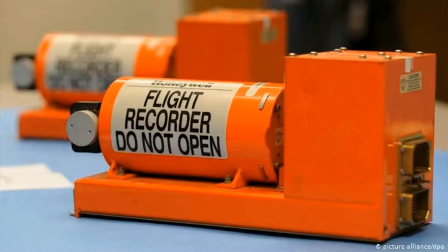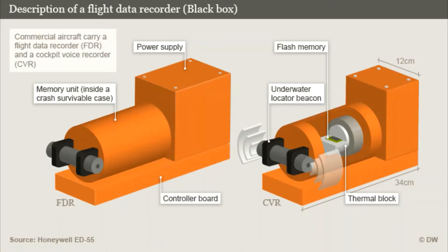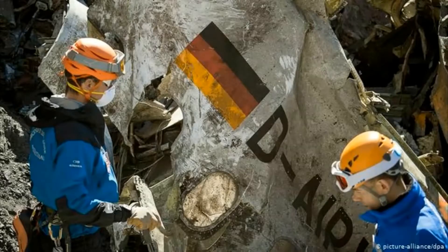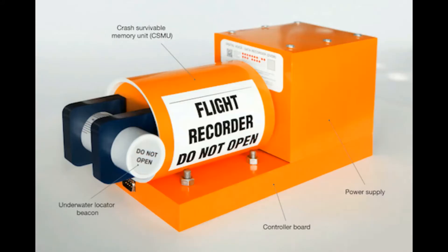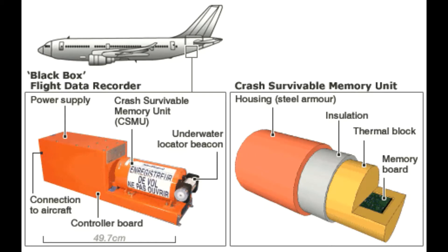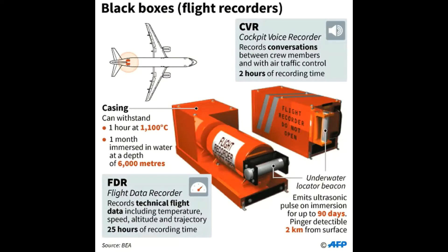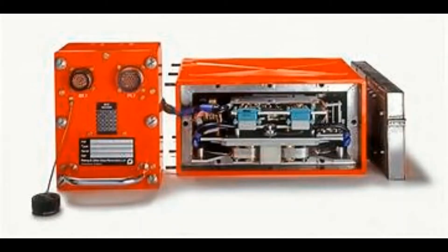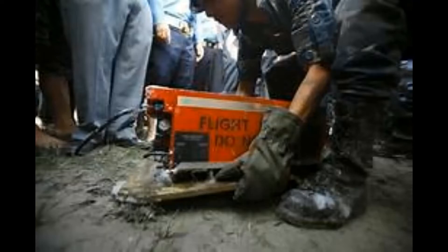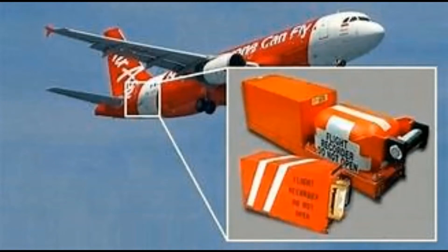The flight data recorder contains all of the instructions sent to any electronic systems. If you want to establish why a plane crashed, you need to recover the black box — the virtually indestructible orange device. The hunt for the black box is a central part of any crash investigation.